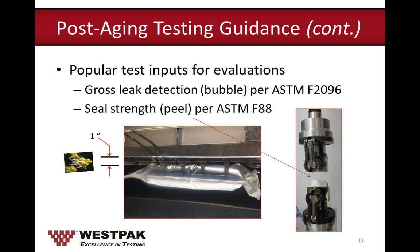The second popular test is seal strength, also known as peel — used to determine how much force it takes to open the package. There's no universal acceptance criteria for this; it should be determined by you through seal validation: IQ, OQ, and PQ. A very common starting point is the one pound per inch requirement. There are three testing techniques for peel testing: the unsupported technique, which is the most conservative; the supported 180-degree technique; and the supported 90-degree by-hand technique. The two most popular among our customers are the unsupported and supported techniques — in 12 years here at Westpac, I've only performed the supported 90-degree by-hand technique three times.